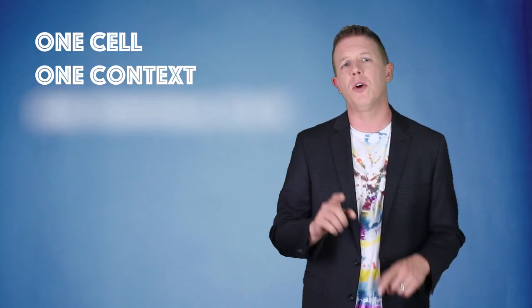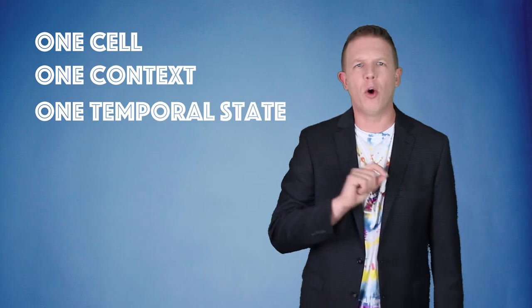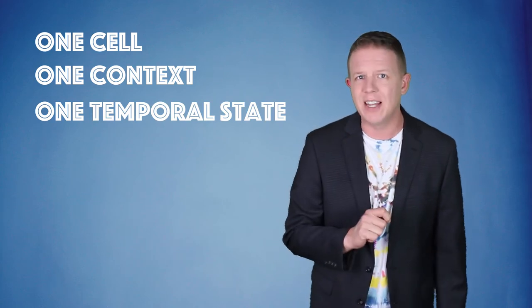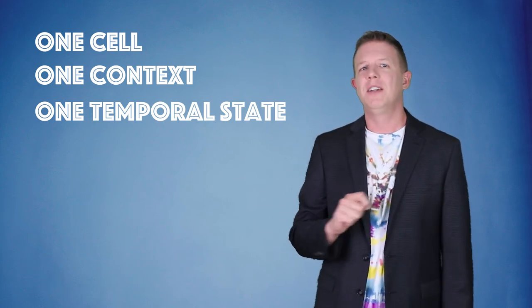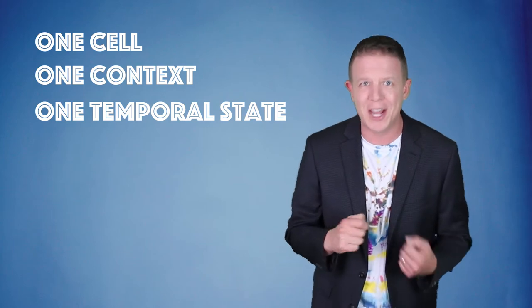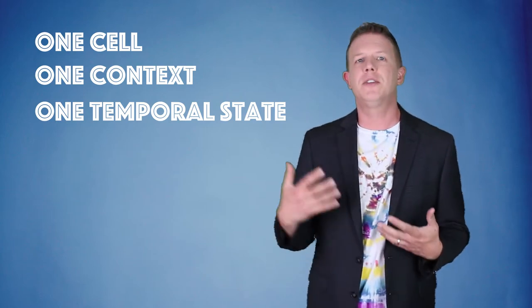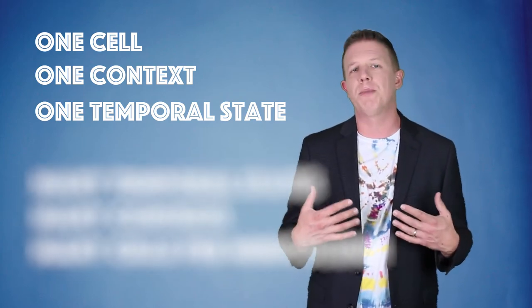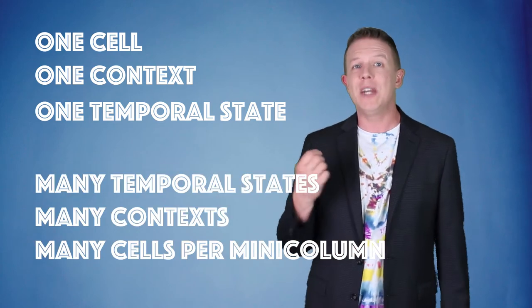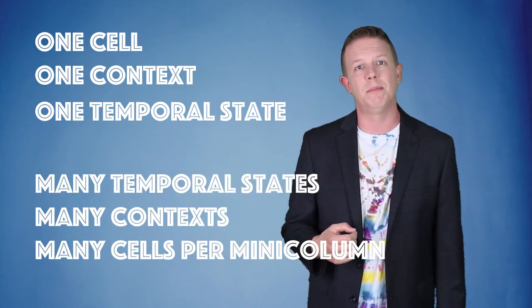So having one cell per column restricts each column to represent a spatial feature in only one context. Meaning it only has information from the current state to make predictions about the future. This severely limits the functionality as a learning algorithm. A good sequence memory needs to recognize spatial patterns with many different contexts. And that's why we need many cells per minicolumn.